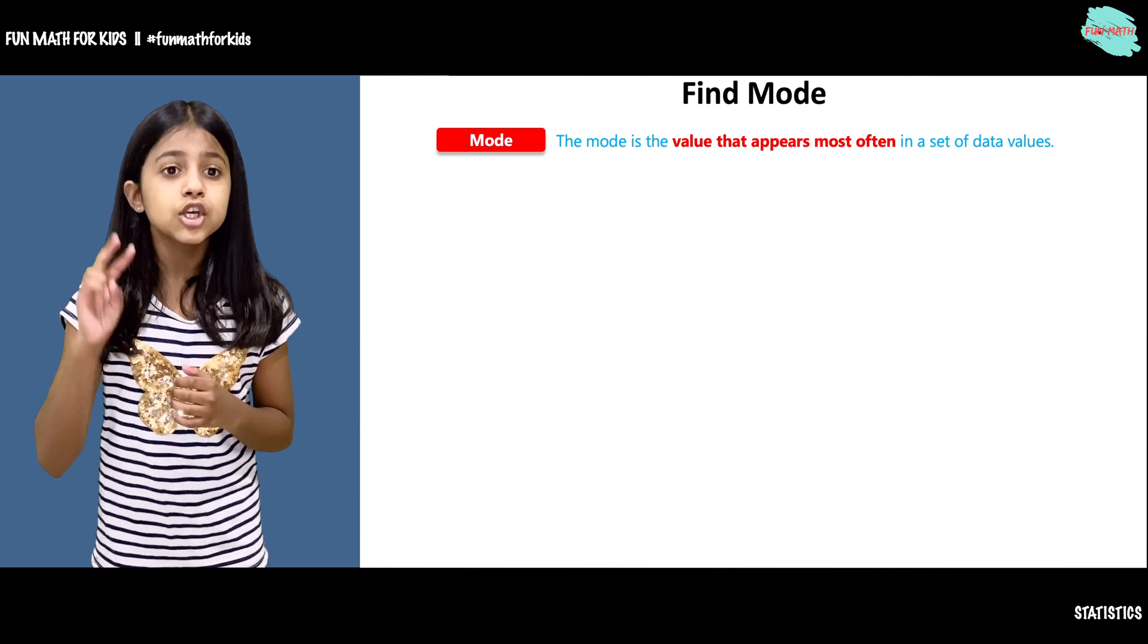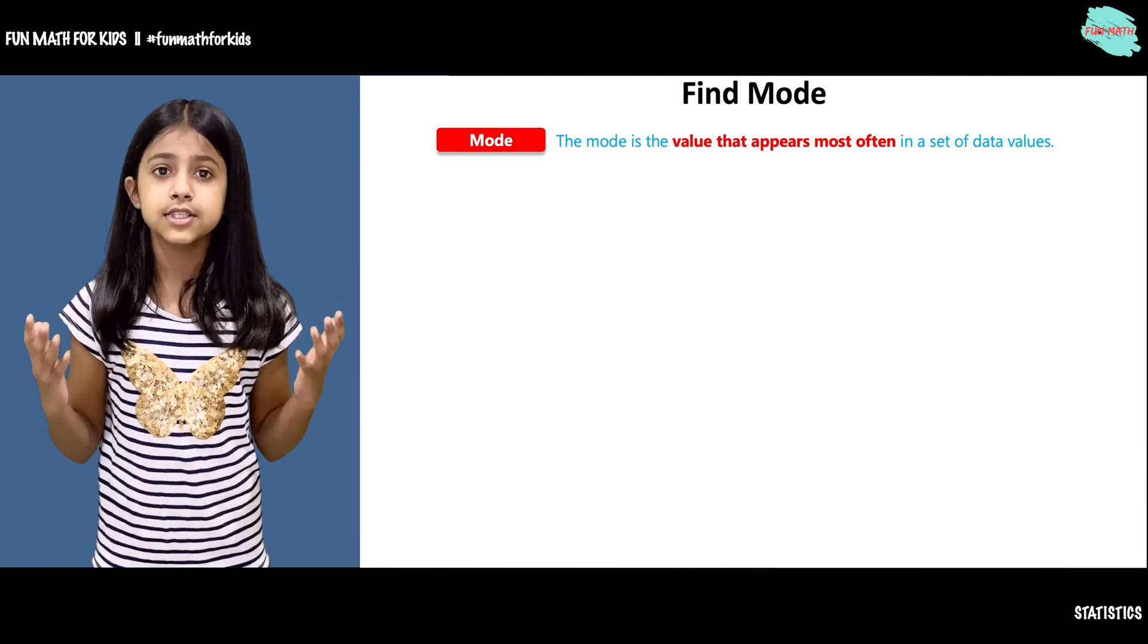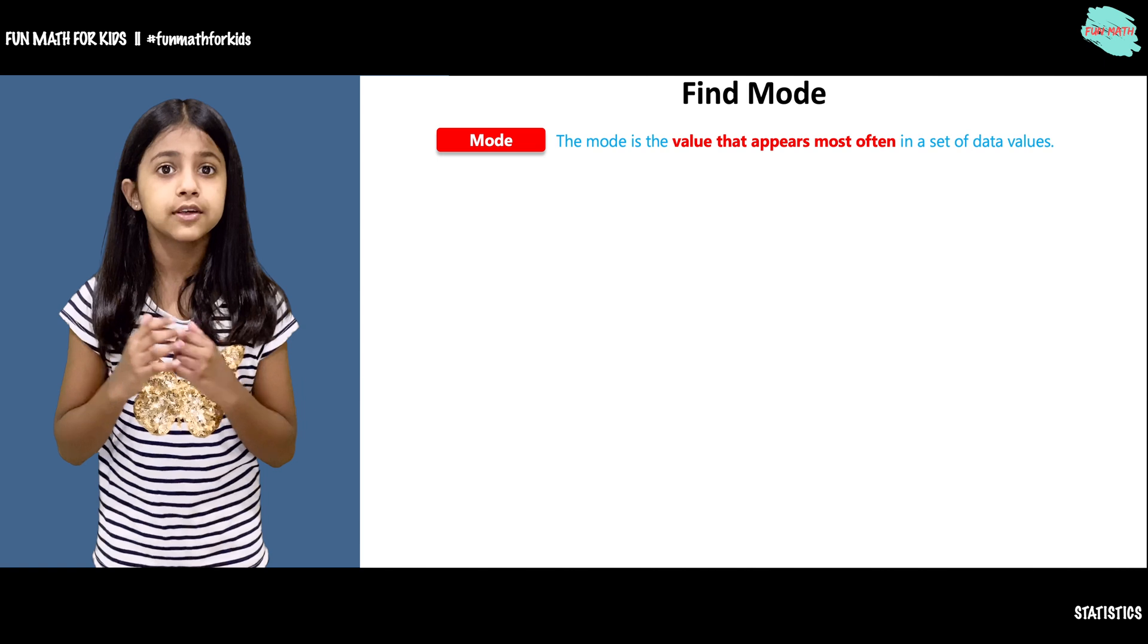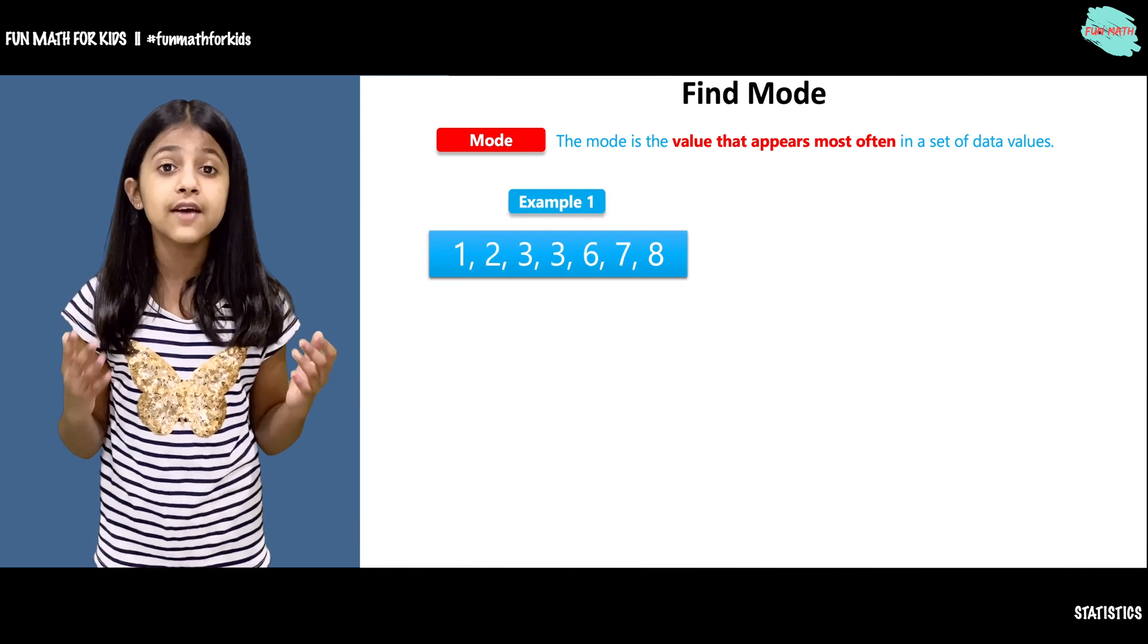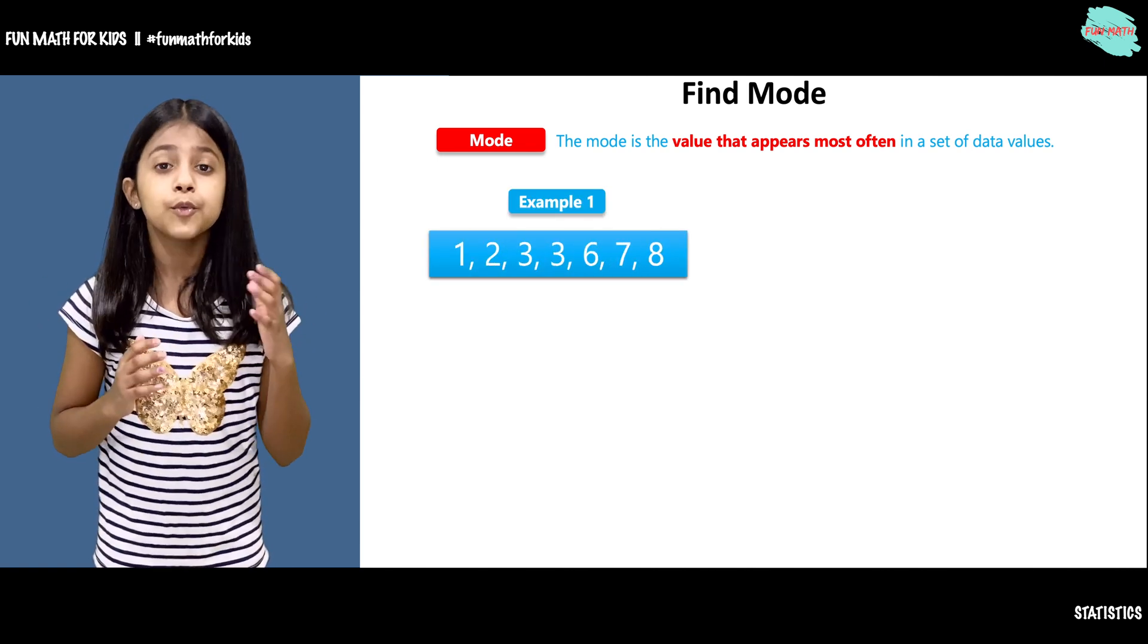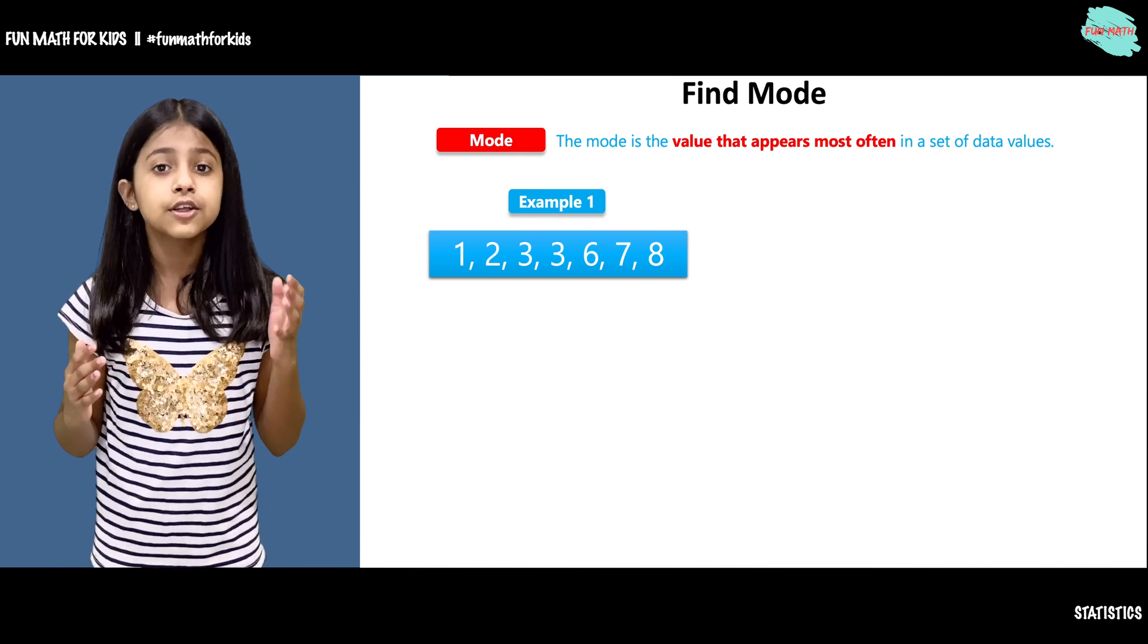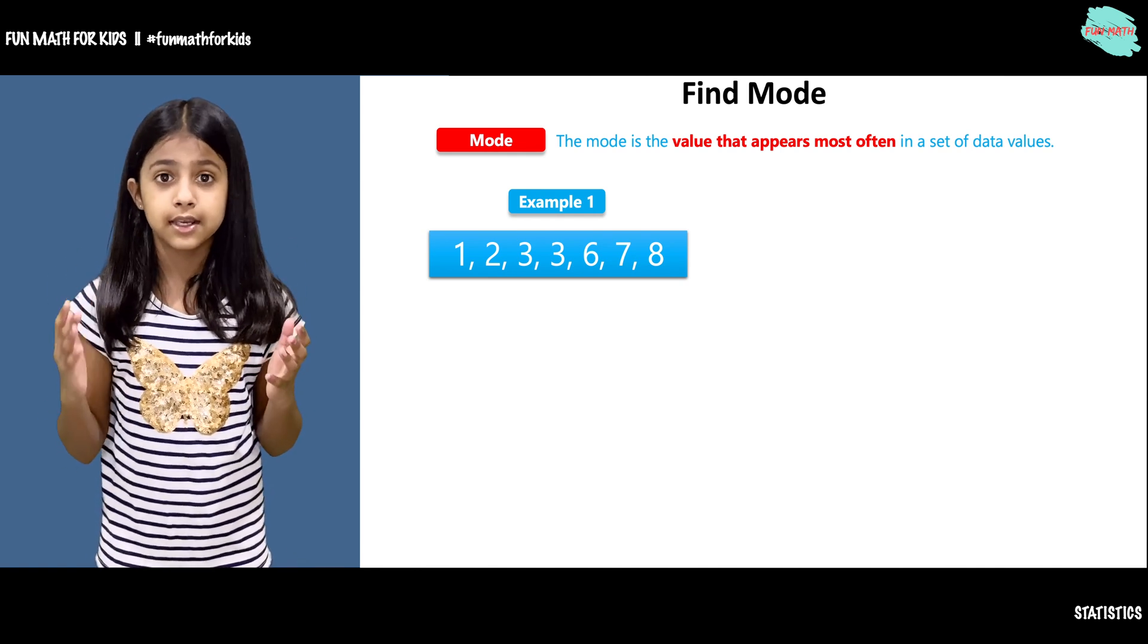Here we have two examples to understand how to find the mode. In the first example we have a data set. It has numbers 1, 2, 3, 3, 6, 7, and 8.